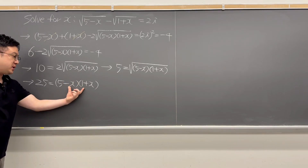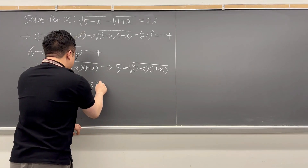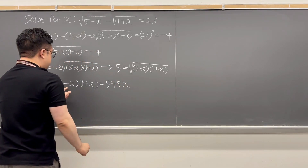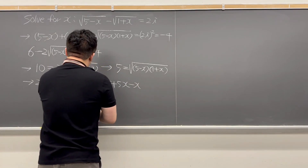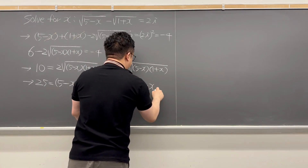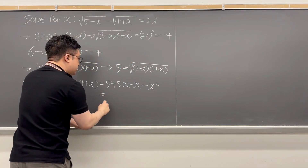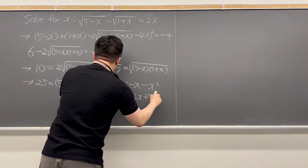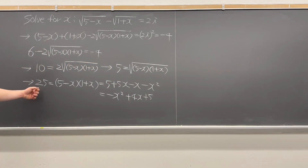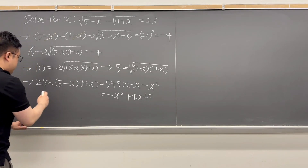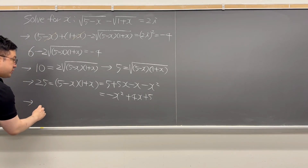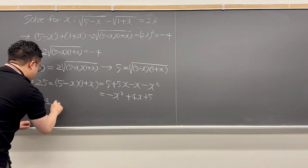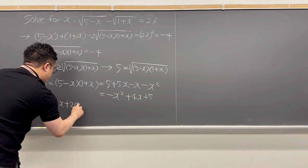Let's distribute these two parentheses. The right-hand side is 5 plus 5x minus x minus x squared, which simplifies to negative x squared plus 4x plus 5. That is equal to 25. Moving terms around, the quadratic equation becomes x squared minus 4x plus 20 equals 0.